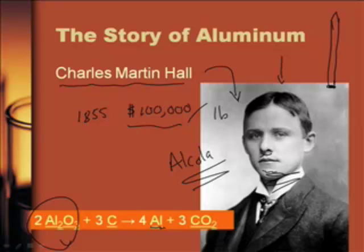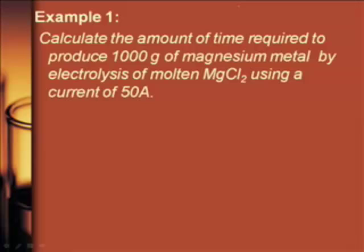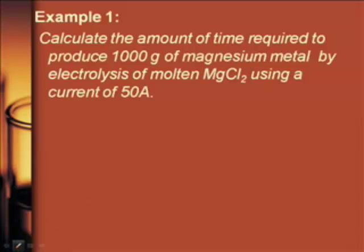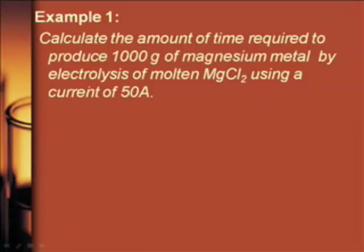And so it's called the Hall-Heroult process because actually, interestingly enough, simultaneously, there was this German dude who figured out how to do it. And they figured out the same thing, and they never talked to each other. So now it's called the Hall-Heroult process. Kind of like the whole who discovered oxygen thing. Or calculus, for that matter.